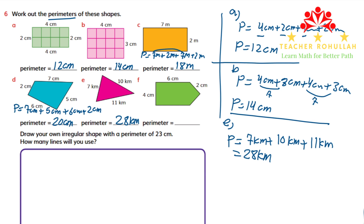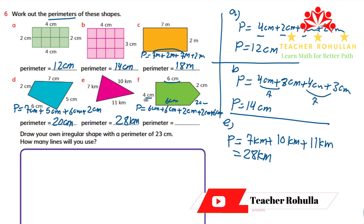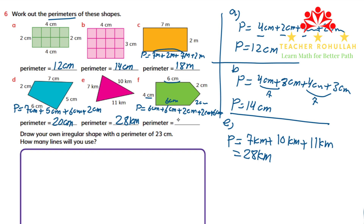We are done with shape E. Let's now work on the perimeter of shape F. Shape F is a five-sided shape, so it is a pentagon. To find the perimeter, we just add the lengths: four centimeters plus six centimeters plus two centimeters plus two centimeters plus six centimeters. Six plus six is twelve, two plus two is four, and four plus four is eight. Twelve plus eight is twenty. So the perimeter of shape F is 20 centimeters.